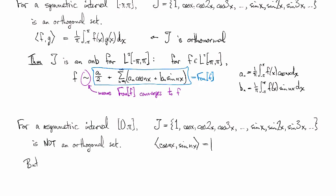But if we look at, let's take the set C to be the collection 1, cosine x, cosine 2x, cosine 3x, etc. This set here is orthogonal by itself now on 0 to pi.